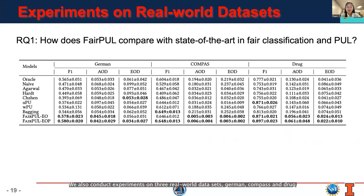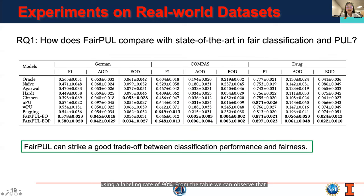We also conduct experiments on three real-world datasets, German, COMPAS, and DRUG, using a labeling rate of 90%. From the table, we can observe that fair PUL can strike a good trade-off between classification performance and fairness.